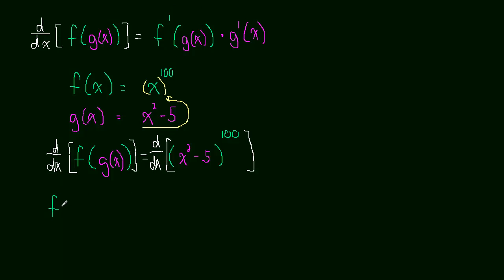It's going to be f prime of g of x, so the derivative of the outside function, and leave the inside function inside unchanged, times by the derivative of the inside function. f prime of g of x, or g prime of x is what I was writing.